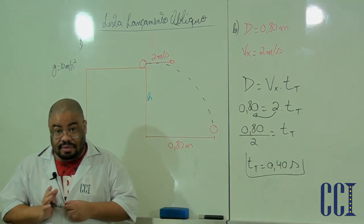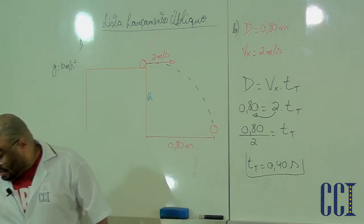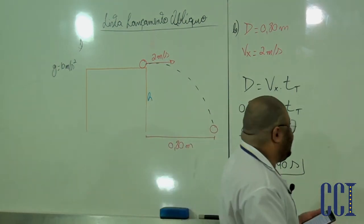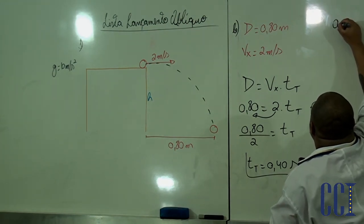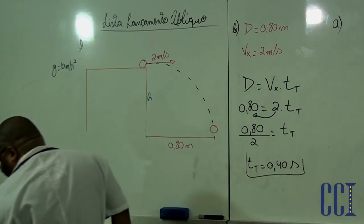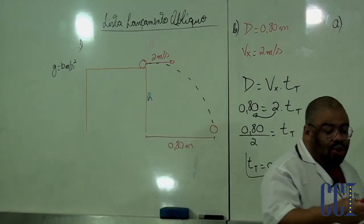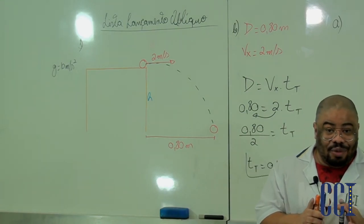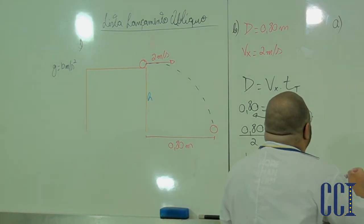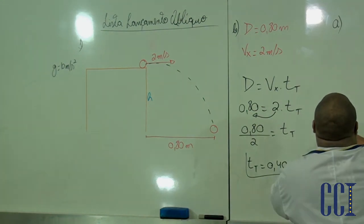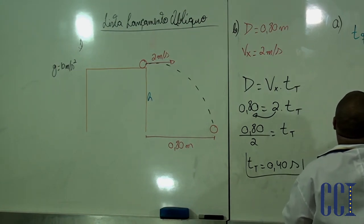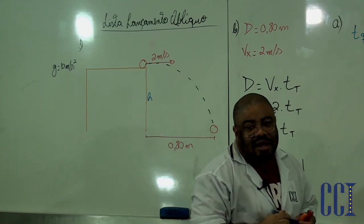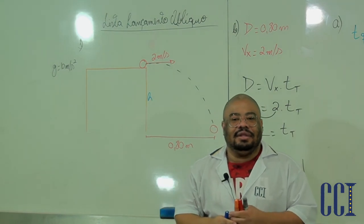Achando o tempo de queda, a letra A quer saber a altura da mesa. Para descobrir a altura, só tenho uma equação que tem altura. A única equação que tem altura é: tempo de queda = raiz quadrada de (2H / g).